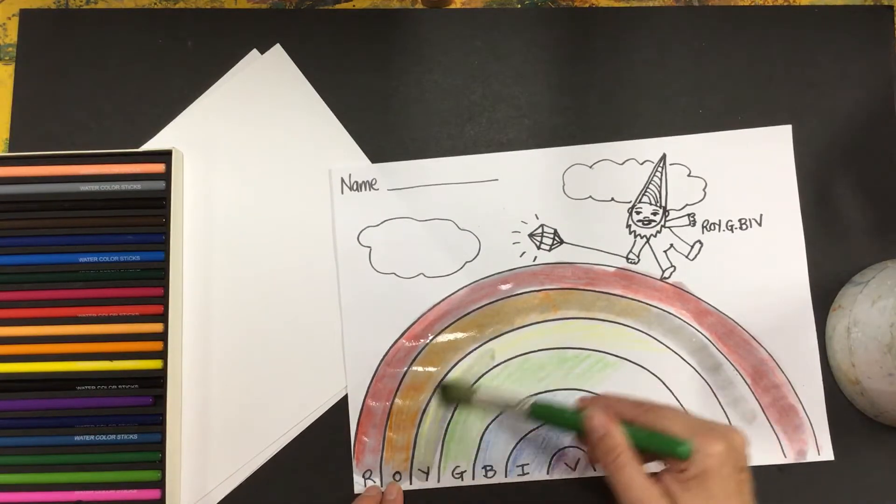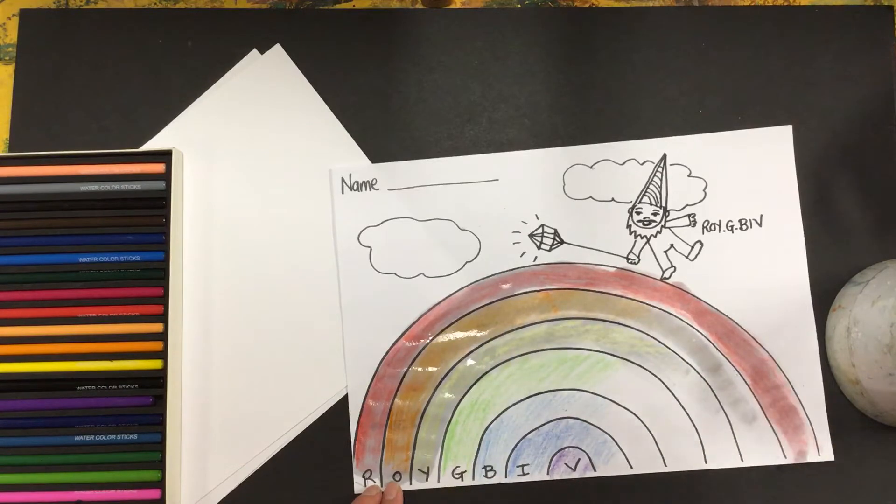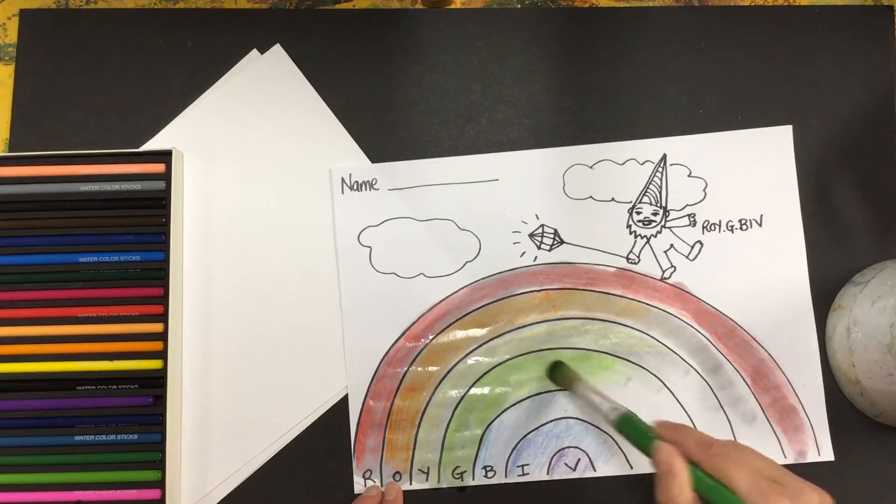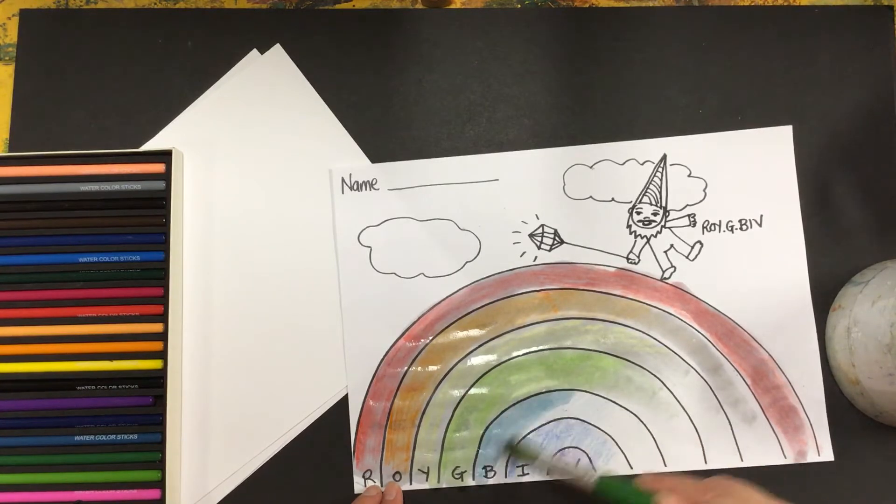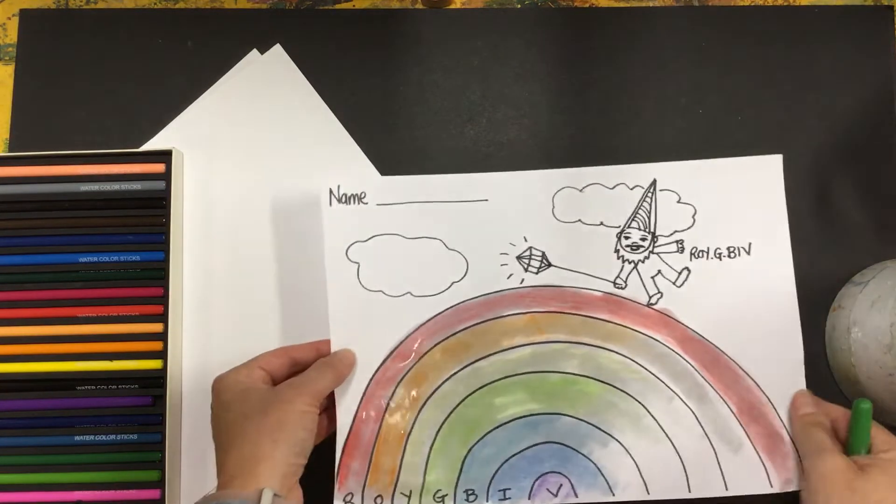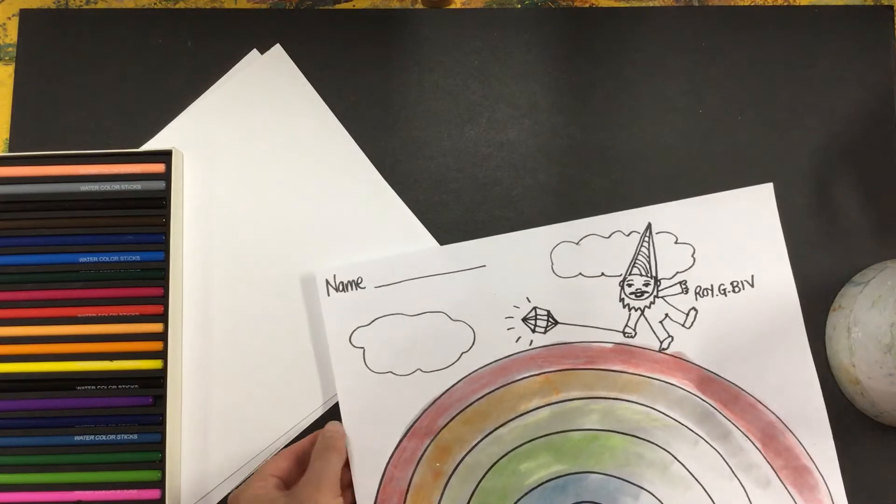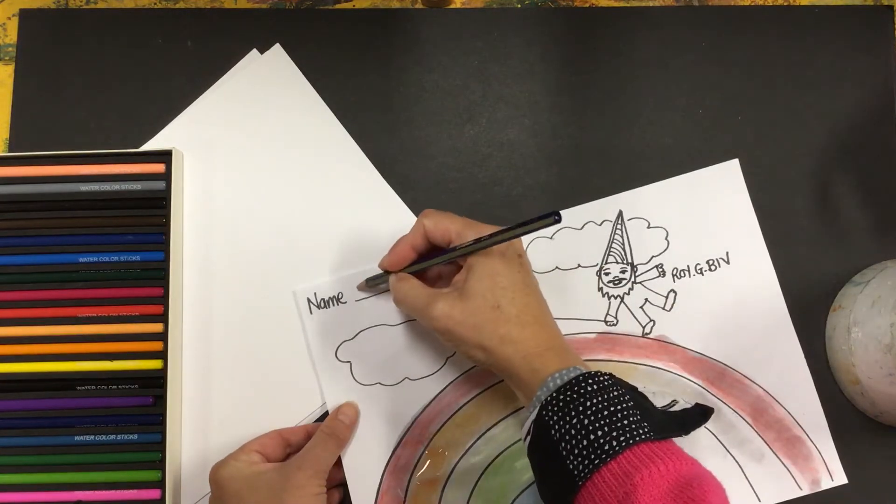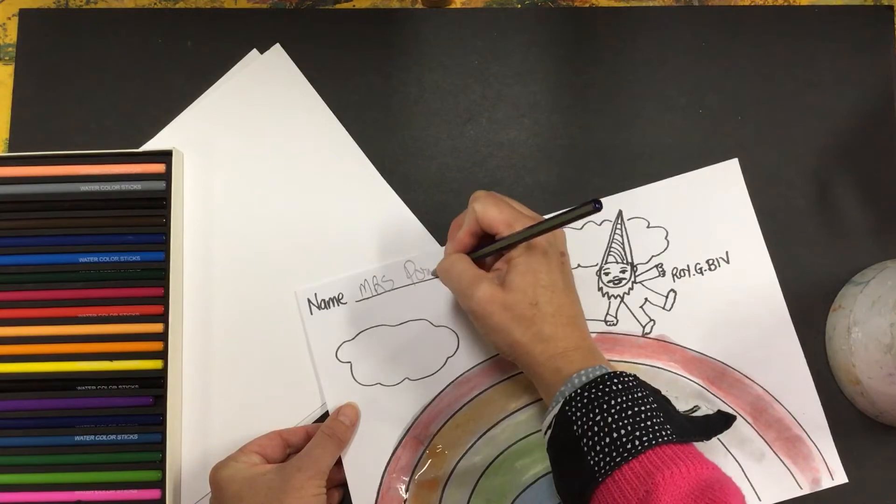I didn't color mine the whole way. Let's see if they, it does kind of work, doesn't it? I'm going to put that on the drying rack. But before I do, I've got to write my name. Mrs. Palamore.